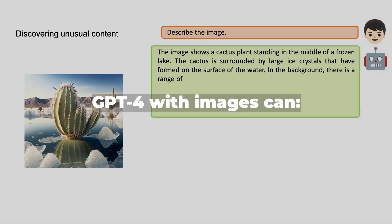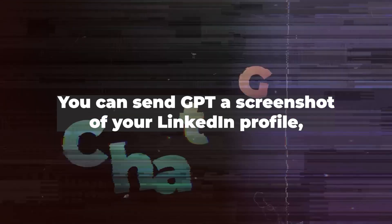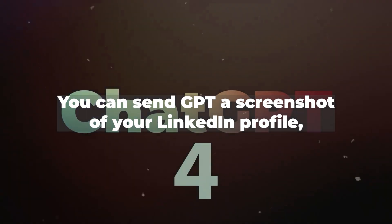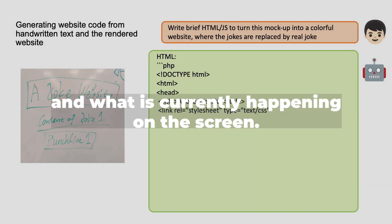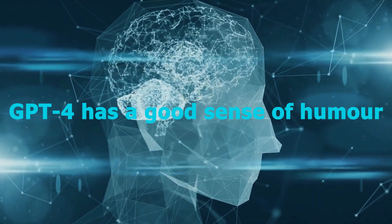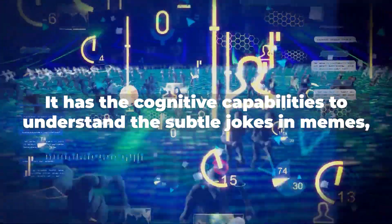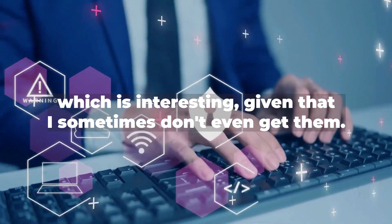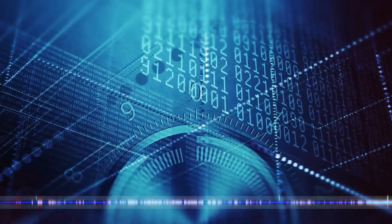GPT-4 with images can recognize any computer screen, user interface, or combination of the two. You can send GPT a screenshot of your LinkedIn profile and it will be able to tell what platform you're on and what is currently happening on the screen. GPT-4 also has a good sense of humor — it has the cognitive capabilities to understand the subtle jokes in memes, so the next time you come across an Elon Musk meme on Twitter that you don't understand, you know what to do.